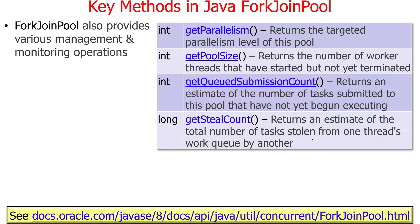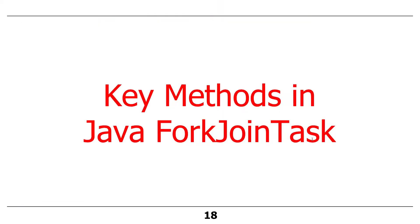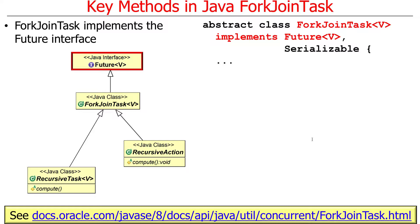There are also a bunch of helper methods you can use to figure out what's going on: what's the parallelism level of the pool, how many worker threads have started but not yet terminated, what's the number of items queued up for running, stealing, and all kinds of different things. That's the ForkJoin pool interface, and you'll get a chance to play around with some of these methods for assignment two, including the common ForkJoin pool.